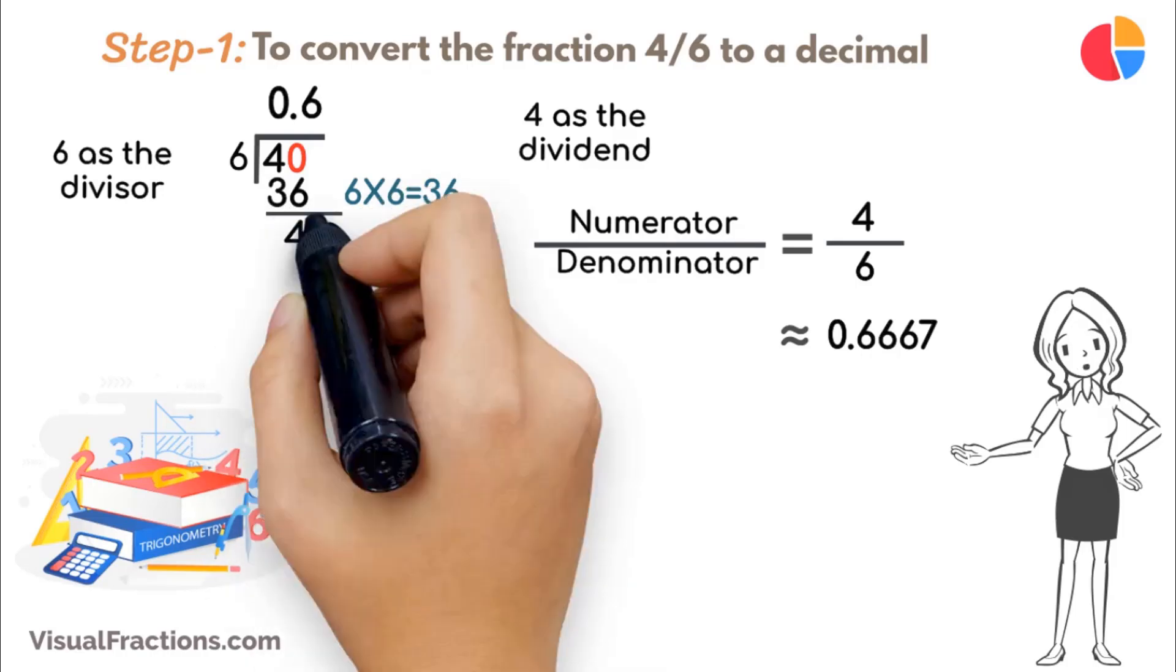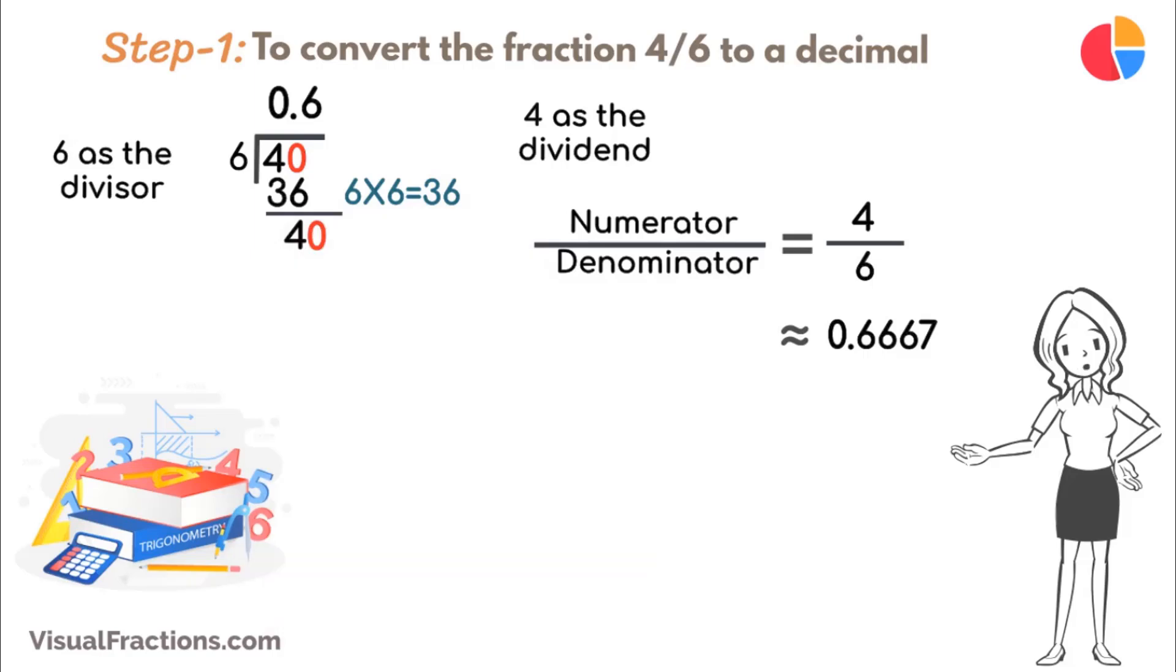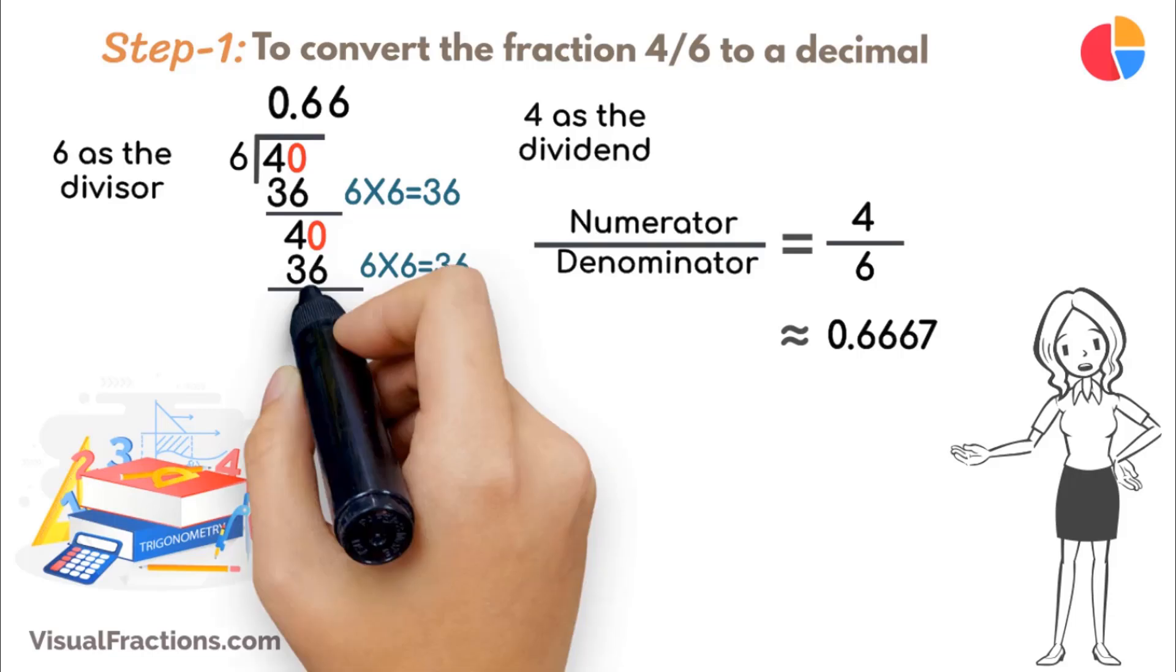Next, bring down another 0 to make it 40 again. Then, 6 goes into 4 six times, updating the quotient to 0.66. Multiply 6 by 6 to get 36, and subtract this from 40, leaving a remainder of 4.